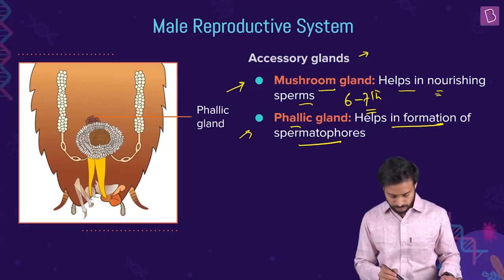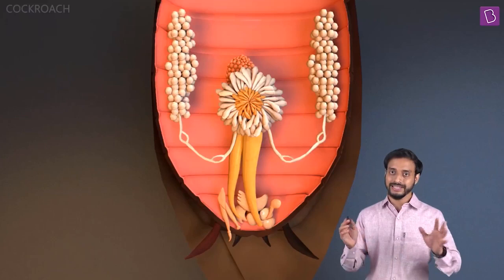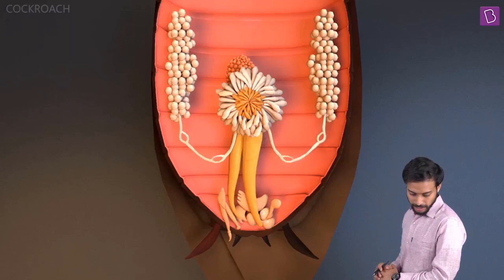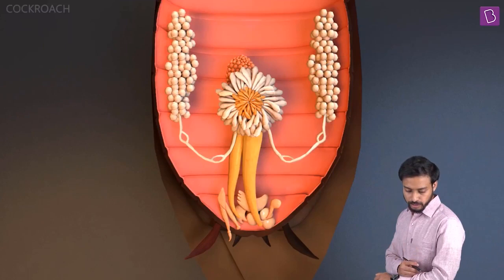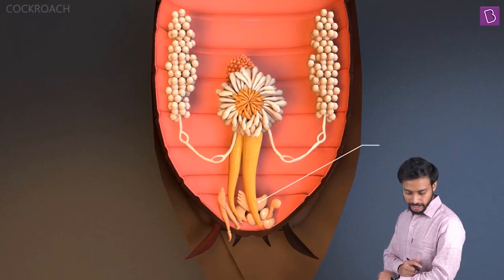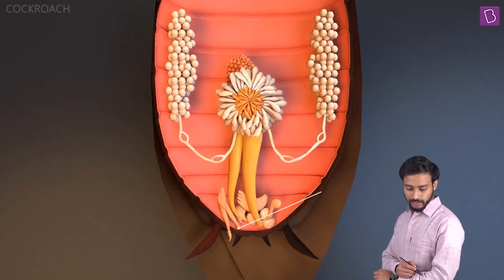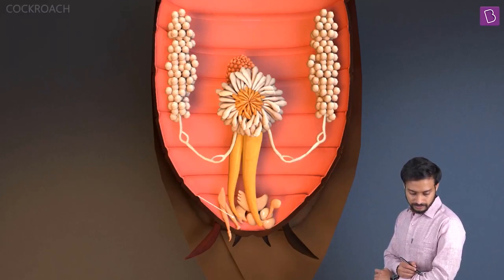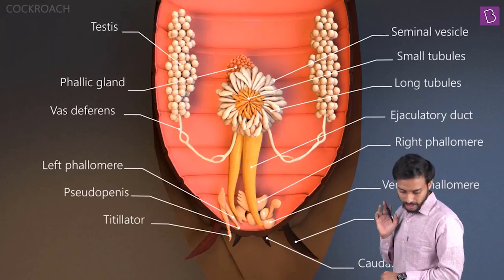Now let's look at the proper three-dimensional view of the male reproductive system. You can see the testes, the small and long tubules, the seminal vesicle, the vas deferens, the ejaculatory duct, the right phallomere, the ventral phallomere, anal cerci, caudal styles (specific to males), pseudo penis, titillator, and the left phallomere.